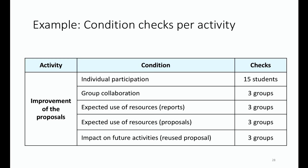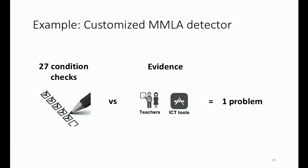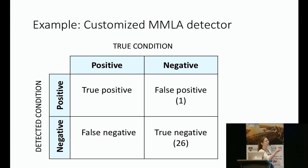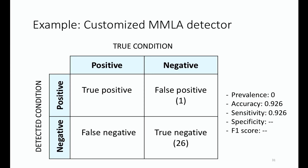We came up with 27 condition checks, took the evidence the teacher was suggesting, and found one problem — in 26 cases our detector was fine, but the other one was a false positive. We elaborated on the performance by checking how often problems were appearing, whether the solution was accurate, its sensitivity, specificity, and F1 score, in order to quantify things.